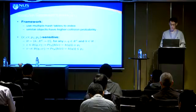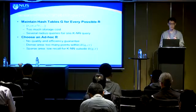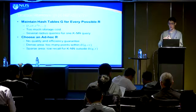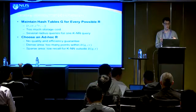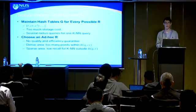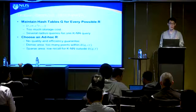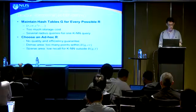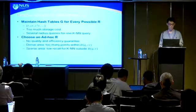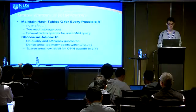The KNN search problem is strictly harder than the radius search problem. This is because finding the KNN effectively uses the K-th nearest neighbor distance as the radius for a radius search — but you cannot foresee this distance in advance, and for different queries the radius is different. A naive approach is to maintain hash tables for every possible radius, building indexes with radius R, CR, and so on, but this involves too much storage cost and requires several radius queries per KNN query.